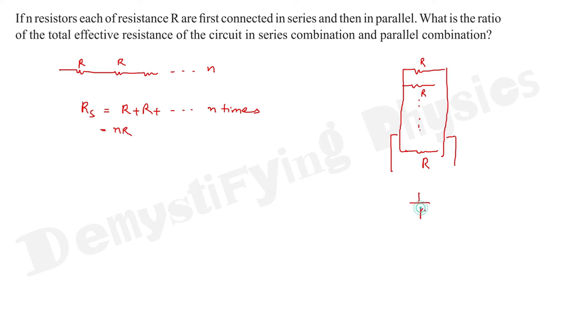1 by Rp is 1 by R plus 1 by R plus 1 by R... like this we will write n times because n resistors are there. So you get n by R, Rp becomes R by n.